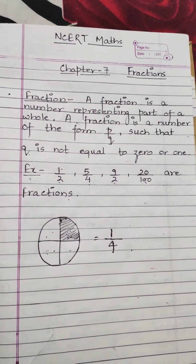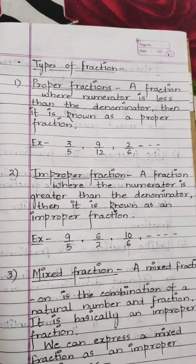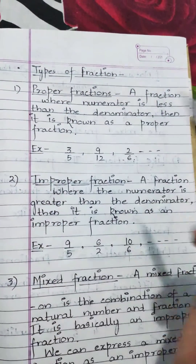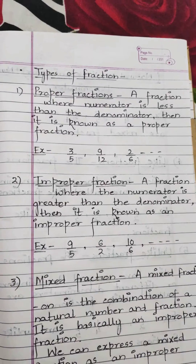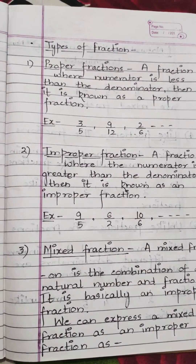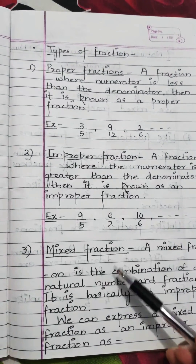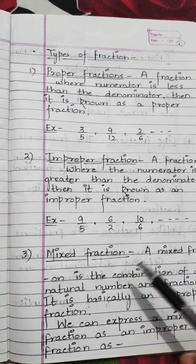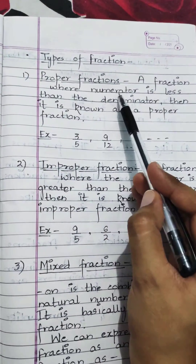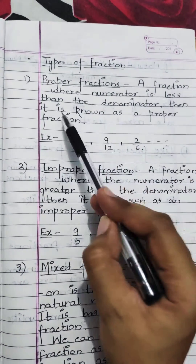There are some types of fractions. The three major types of fractions are proper fraction, improper fraction, and mixed fraction. We will start with the proper fraction: a fraction where the numerator is less than the denominator is known as a proper fraction.